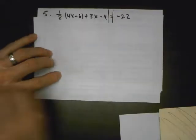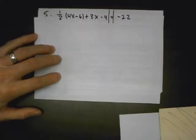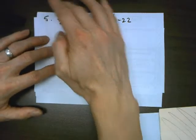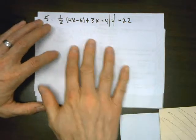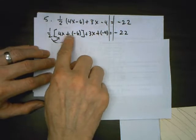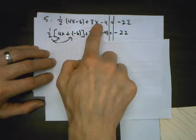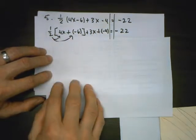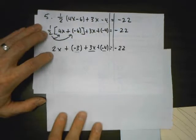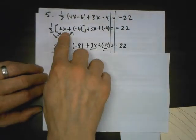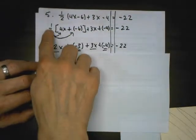Number 5 says find the value of x that makes this true — in other words, solve this. I do the rule for subtraction first: add the opposite, draw two sticks. Now I distribute. Distributing and combining like terms is how we simplify, so we simplify first.